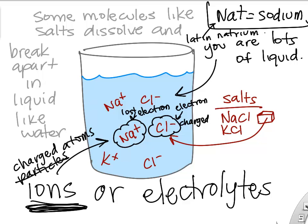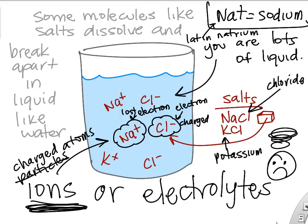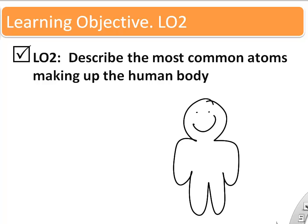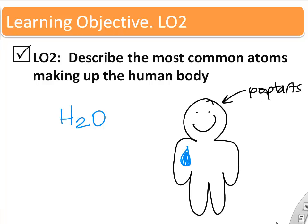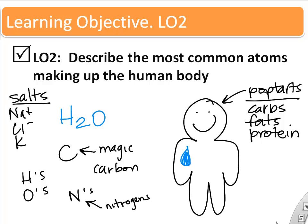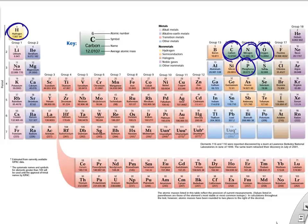Na⁺ is an atom of sodium — the abbreviation comes from the Latin name natrium. Now let's look at what atoms we expect in the human body. H₂O is made of hydrogen and oxygen atoms. Carbon is the backbone of carbs, fats, and proteins. We find a lot of hydrogen, oxygen, and even nitrogen in our body, plus salts like sodium, chloride, and potassium.